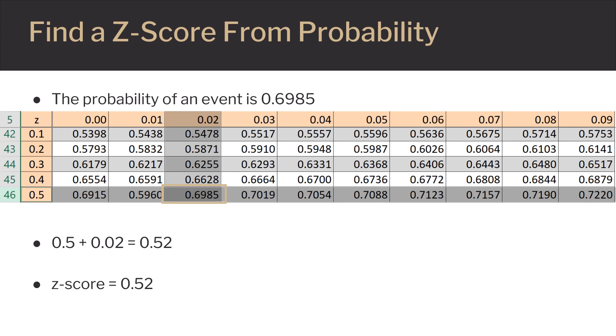To find the Z-score from probability, you have to use a Z-table. If the probability of an event is 0.6985, you look for that value on the Z-table. From there, you can look and see that the row 0.6985 is in, is in 0.5, and the column is 0.02. So, 0.5 plus 0.02 equals 0.52, which means your Z-score is 0.52.